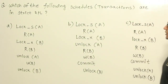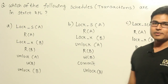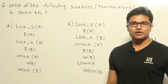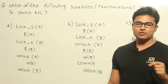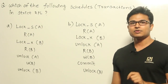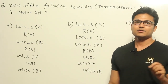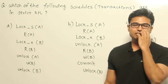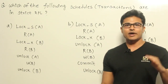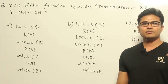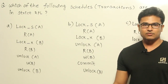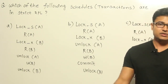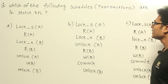Now, which of the following schedules are in strict 2PL? What does strict 2PL mean? If you are going to take any exclusive lock on a data item, you are not supposed to release it until you commit. So whatever shared or exclusive locks you have on data items, just hold them till you commit — after that you release them. If you can do that, then you can say that it is strict 2PL.